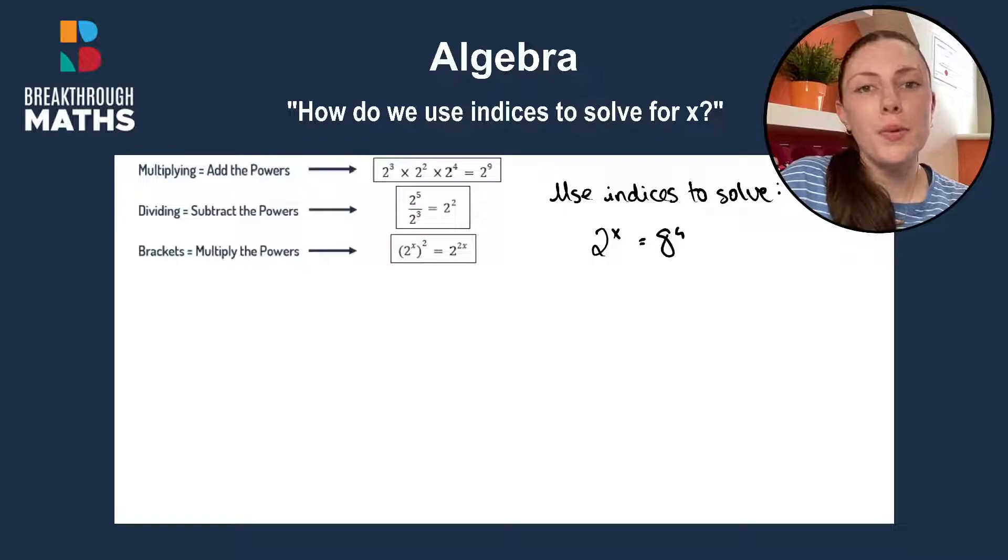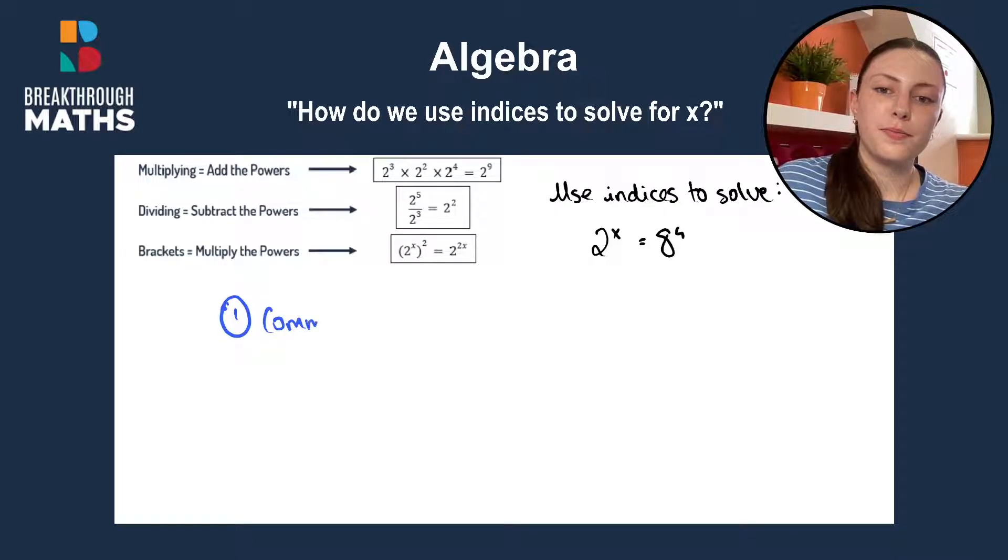First of all, we need to go through some of the basics of indices which is on the left hand side here of the screen. The first and most important rule is that we need a common base. Now, I'll explain what the common base is. As you can see here, our base number below the power is 2 for each of these, so we have a common base of 2.